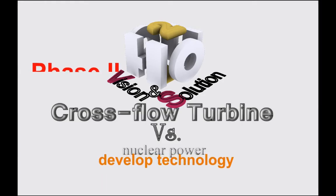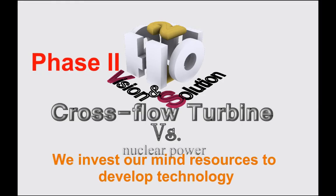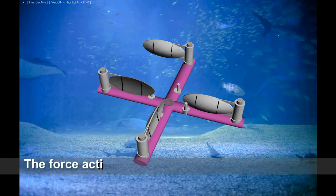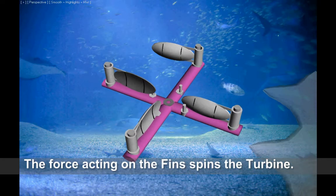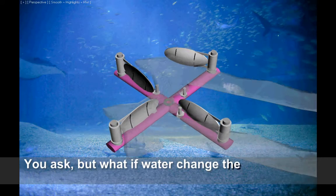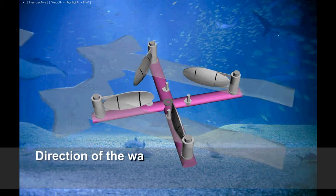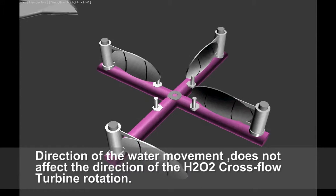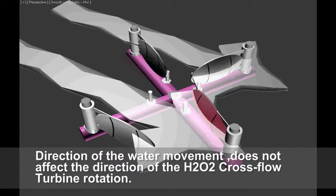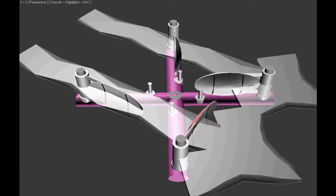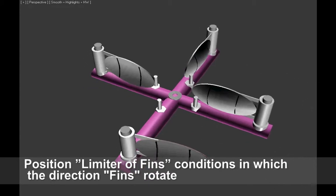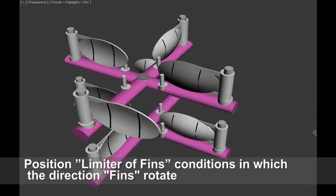Phase 2: We invest our mind resources to develop technology. The force acting on the fins spins the turbine. You ask, but what if water changed the direction of movement? Direction of the water movement does not affect the direction of the H202 cross flow turbine rotation. Position limiter of fins conditions in which direction fins rotate.